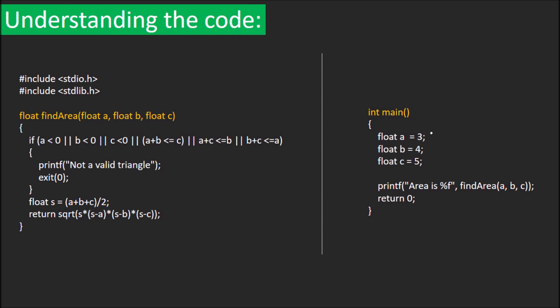We start with the main function. These are the 3 sides of the triangle. The function findArea is called. This function returns float because area can be a non-integer value.